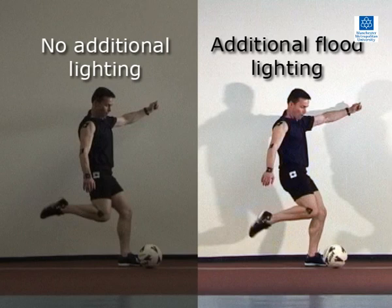The image on the left, which was shot with no additional lighting, is underexposed, whereas the image on the right, shot with floodlighting, is well exposed.